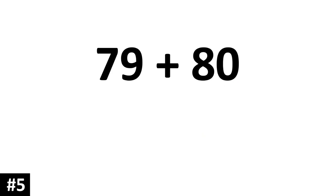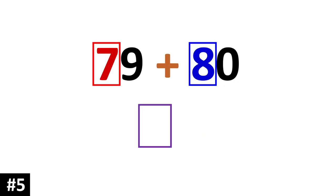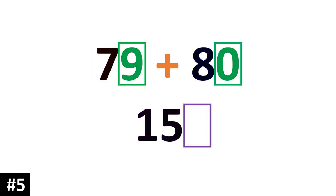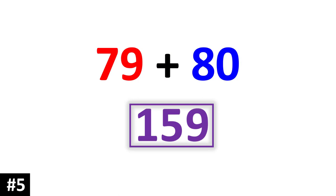79 plus 80. First we focus on the tens: 7 tens plus 8 tens is 15 tens. Then we focus on the ones: 9 ones. So 79 plus 80 is 159.